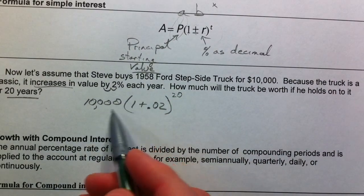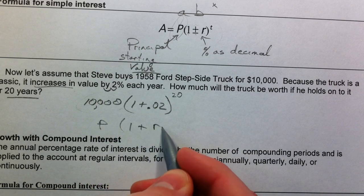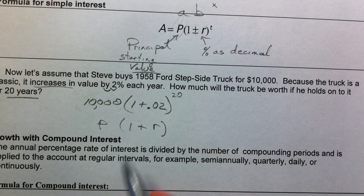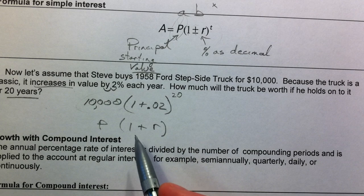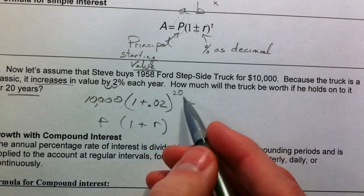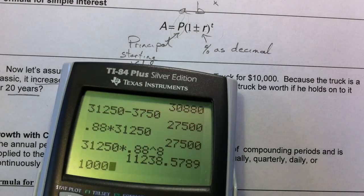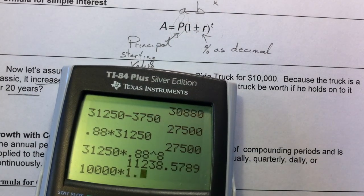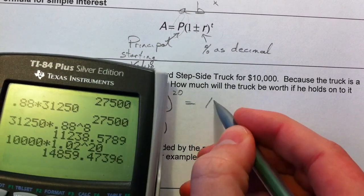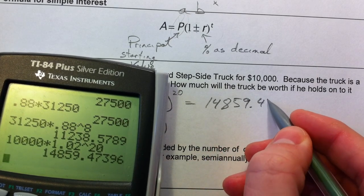So notice $10,000 is our principal. 1 plus our R because it's increasing in value. Notice that we moved, we changed our R to a decimal. If you plug in a 2 there, you're going to have a very valuable truck. But unfortunately, it won't actually be worth that much. And then raise it to the 20th power because we're talking about 20 years. So 10,000 times 1.02 raised to the 20th power. And it's going to be worth $14,859.47.